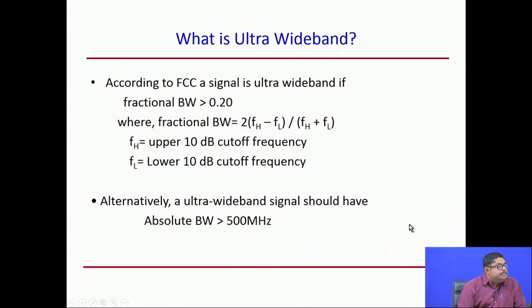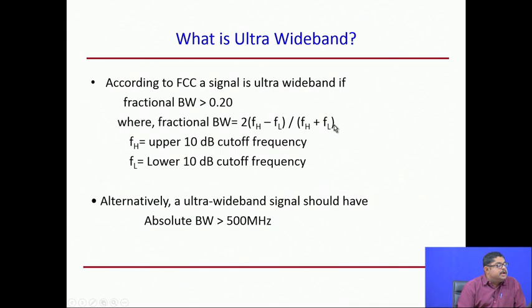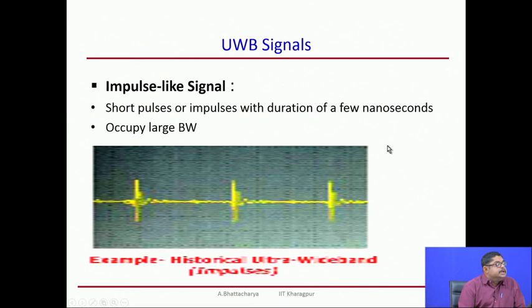We can find the maximum possible bandwidth from this definition. Since f_L must be a positive frequency, theoretically the maximum fractional bandwidth works out to 200 percent. So the maximum bandwidth any signal can have is 200 percent. These signals are typically impulse-like — short pulses of duration a few nanoseconds — and because they are so short in time, they occupy a very large bandwidth.